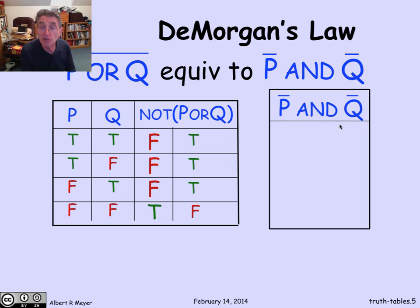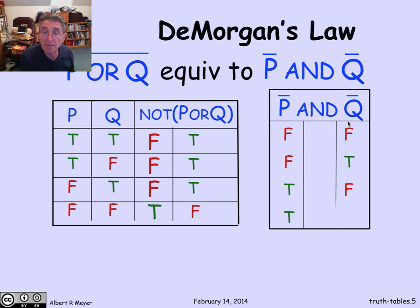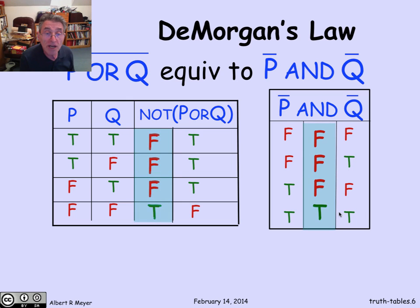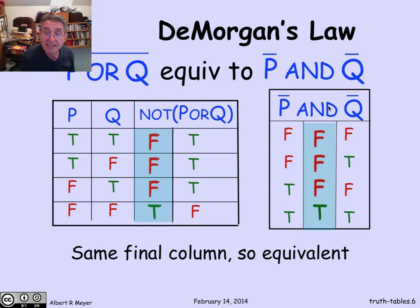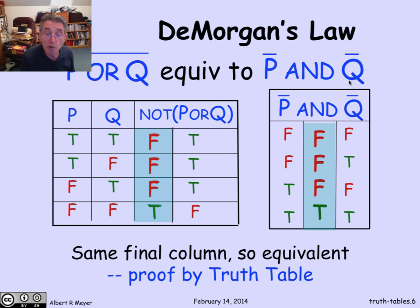Now let's do the same thing for NOT p AND NOT q. This time I'll fill in the values of NOT p and NOT q. NOT p is the flip of the p column, and NOT q is the flip of the q column. Now I can fill in the values of the AND — it's going to be true only when they're both true, and otherwise it's false. The possible truth values of NOT(p OR q) in all possible environments are exactly the same as the possible truth values of NOT p AND NOT q in those corresponding environments. The columns are the same, which means these two formulas are equivalent. That's the proof by truth table — we've examined all possible environments and verified they get the same truth value.